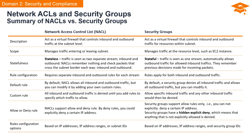Let's summarize network access control lists and security groups and draw comparisons between them. Network ACLs act as a virtual firewall, controlling both inbound and outbound traffic at the subnet level. Security groups also function as a virtual firewall but operate at the resource level within the subnet. NACLs manage traffic entering or leaving the subnet, while security groups manage traffic at the resource level, such as an EC2 instance. NACLs are stateless, perceiving traffic as two separate streams — inbound and outbound — while security groups are stateful, viewing traffic as a unified stream and automatically allowing outbound traffic for permitted inbound traffic.